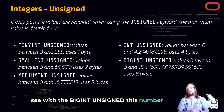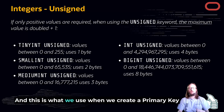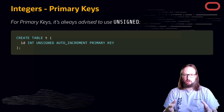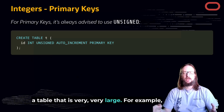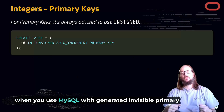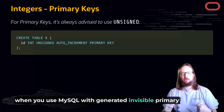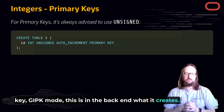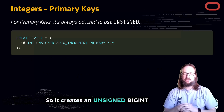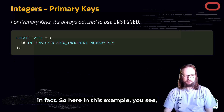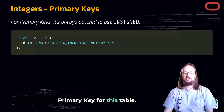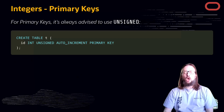BIGINT UNSIGNED gives a very large number, and this is what we use when creating a primary key for a very large table. For example, when you use MySQL with Generated Invisible Primary Key (GIPK) mode, this is what it creates in the backend — an UNSIGNED BIGINT. In this example, I created an INT UNSIGNED AUTO_INCREMENT PRIMARY KEY for this table.